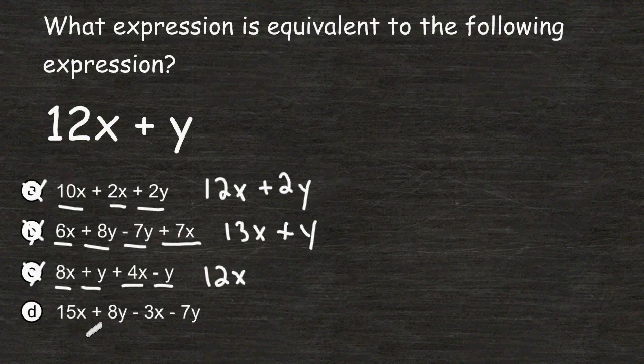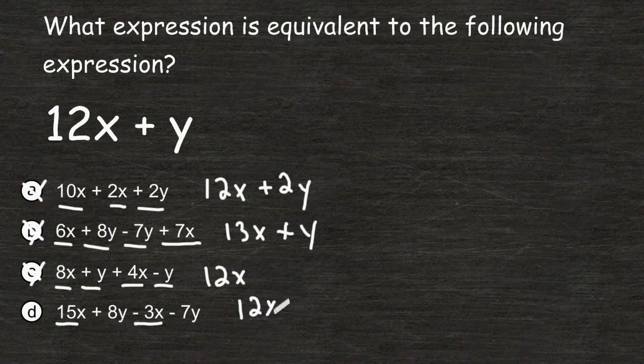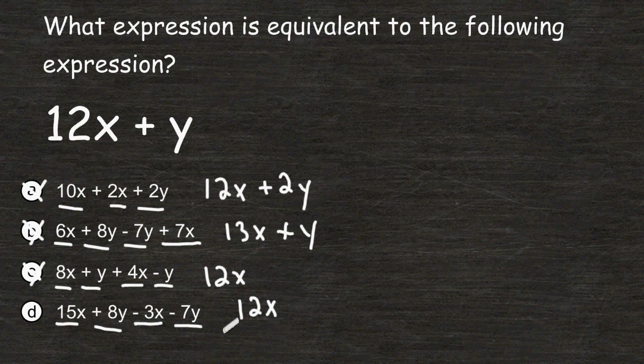But let's just check it to make sure. 15x minus 3x is equal to 12x. And 8y minus 7y is equal to 1y. So we write plus 1y at the end.